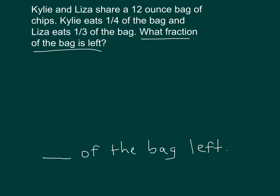Let's draw to better represent this problem. We see it says 12-ounce bag of chips, Kylie eats one quarter of the bag, and Liza eats one third of the bag. The whole within this problem is the whole bag, and we know the whole bag is 12 ounces.